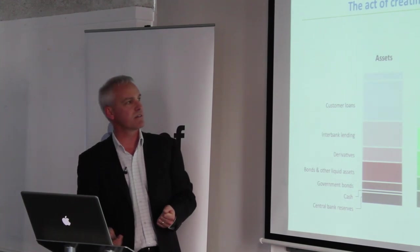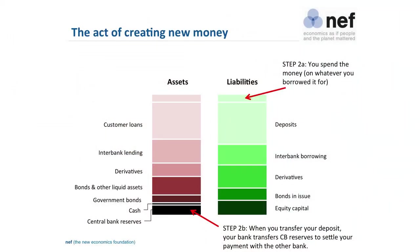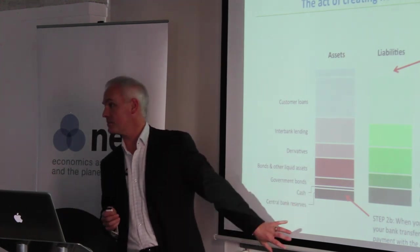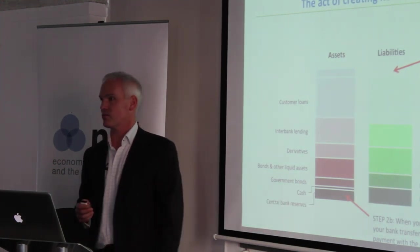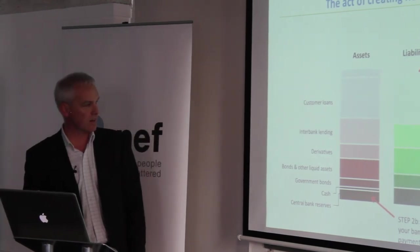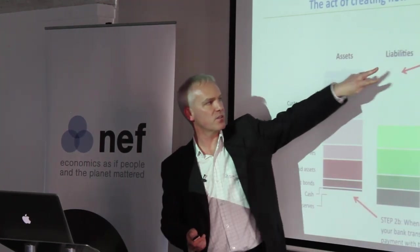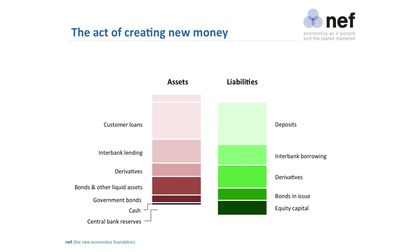So the next step is you spend the money — you borrow the money, buy a car or whatever. When you spend your money and order it to be paid to another bank — assuming your car dealer banks with somebody else — your bank has to settle that same amount through the interbank clearing system using its central bank reserves. An equal amount disappears from reserves and from the deposit. The balance sheet still balances.